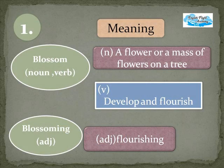The first word for the day is blossom. As a noun, it means a flower or a mass of flowers on a tree. As a verb, it means to develop and flourish. Blossoming is an adjective meaning flourishing.